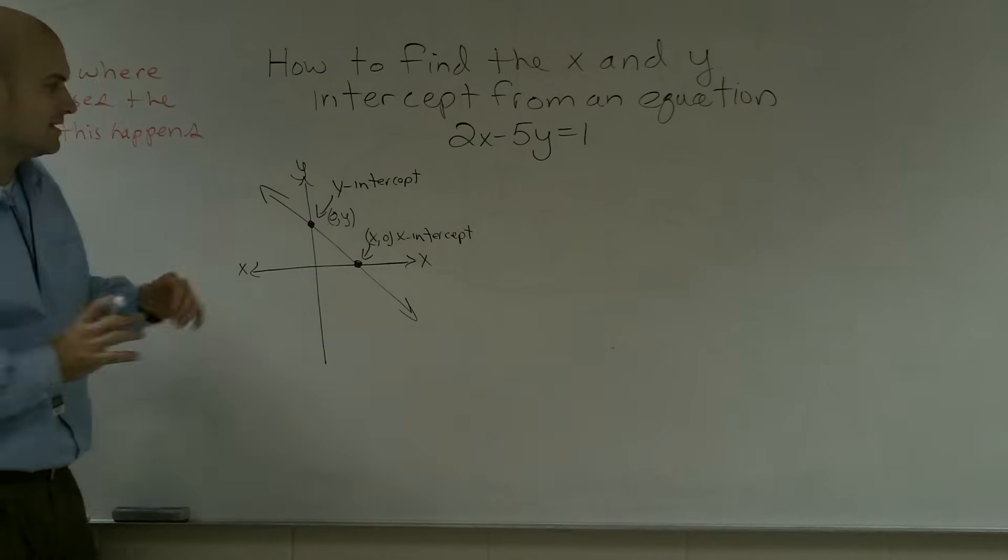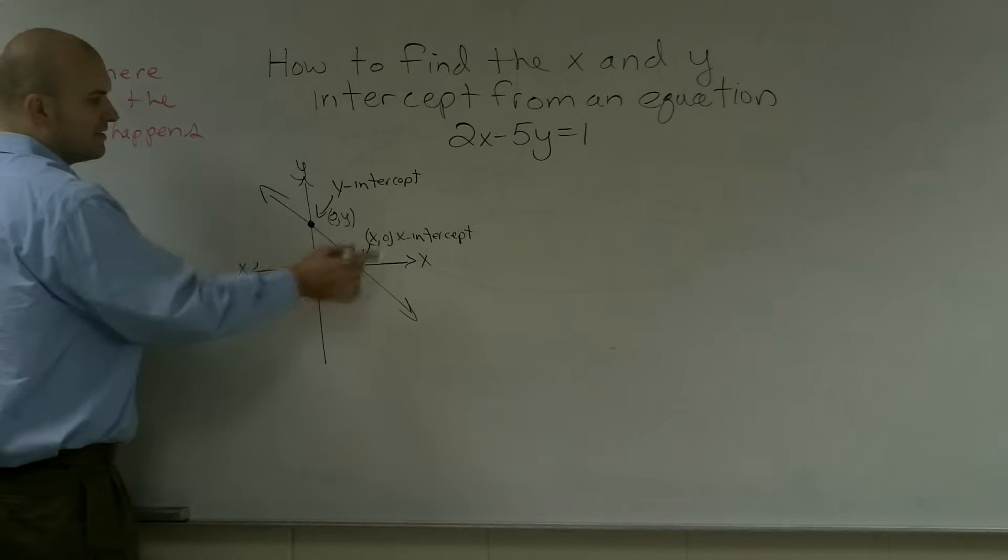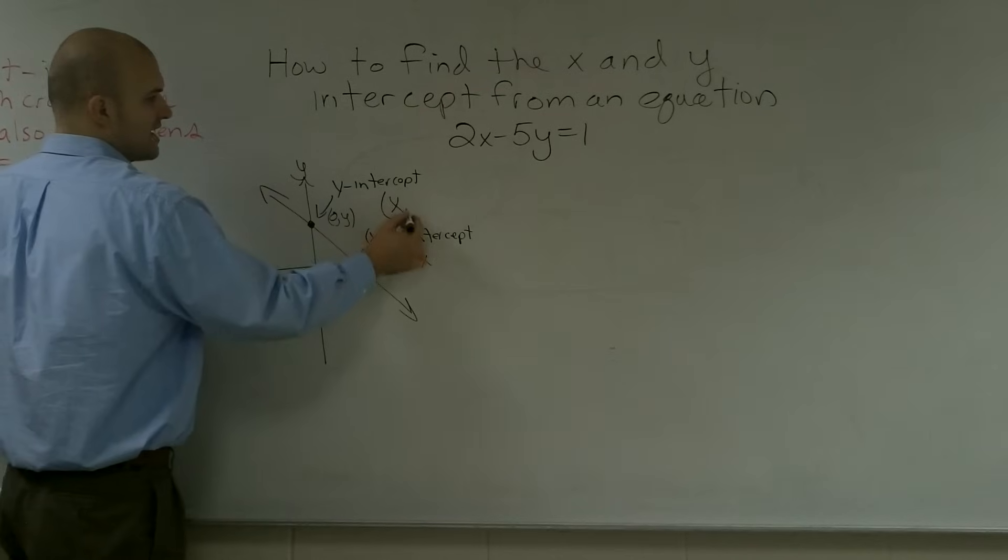The one key important thing that I want to take from this graph is we notice that at the y-intercept, x is 0. And at the x-intercept, our y value is 0. Because remember, a coordinate point is x comma y.